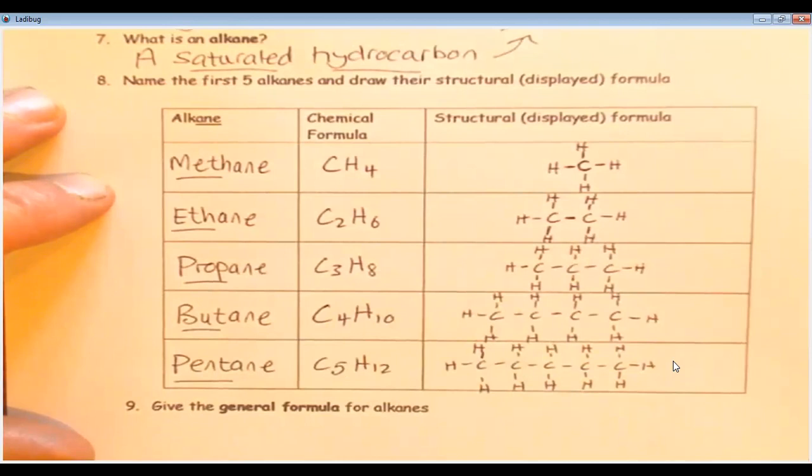Okay, so those are the first five alkanes. Now some of you might have already noticed a pattern in this column here in this chemical formula column and it relates to question number nine which says give the general formula for alkanes. The general formula for alkanes is CnH2n+2.